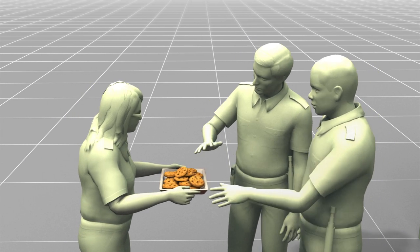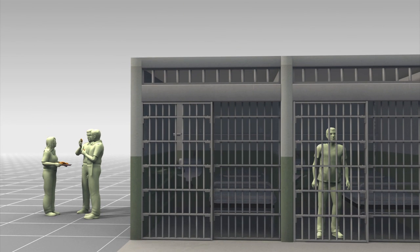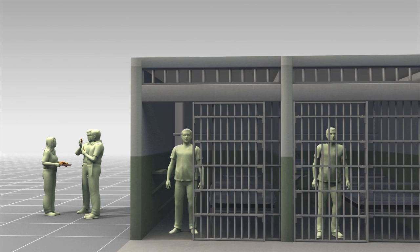Prison tailor Joyce Mitchell used baked goods to earn favors for escaped prisoners Richard Matt and David Sweat, including allowing them to live in cells next to each other.